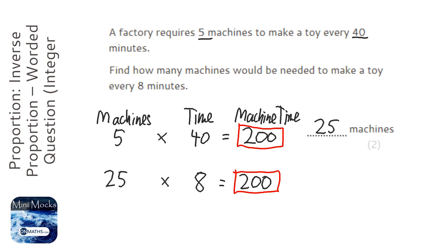Let's just check if it makes sense. So 5 machines take ages, they take 40 minutes to make a toy. Yet 25 machines take only 8 minutes to make a toy. So that makes sense. You'll notice that we've divided that by 5, but we've times this one by 5. And that's the way inverse proportion works. As you divide one of them, you times the other.